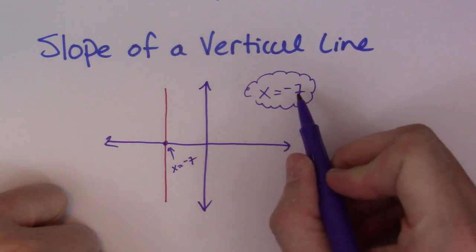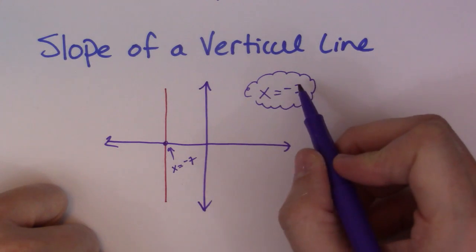That's the equation of a vertical line. x is equal to whatever it goes through. So this is actually the x-intercept.